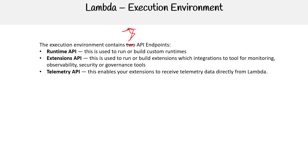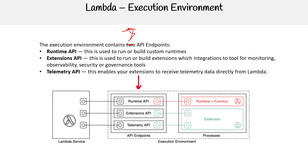Yeah, those are our three APIs, and this is the way they look. For the Extensions API and the Telemetry API, those are used when you are creating your own Lambda extensions, specifically for creating extensions to monitor Lambdas. The Runtime API is something you'd work with if you were making your own custom runtimes.